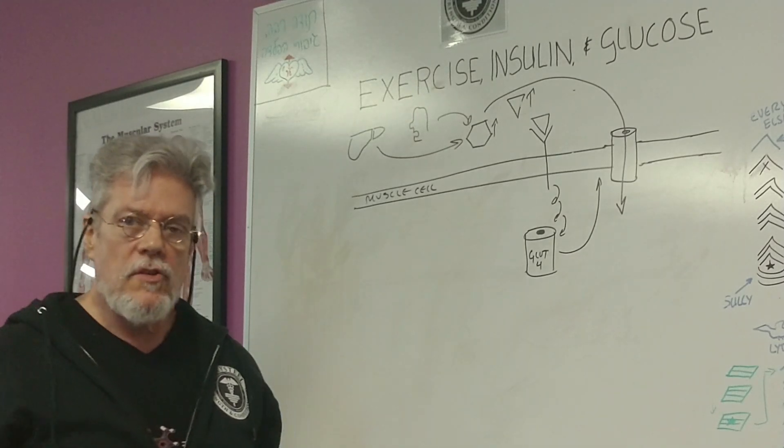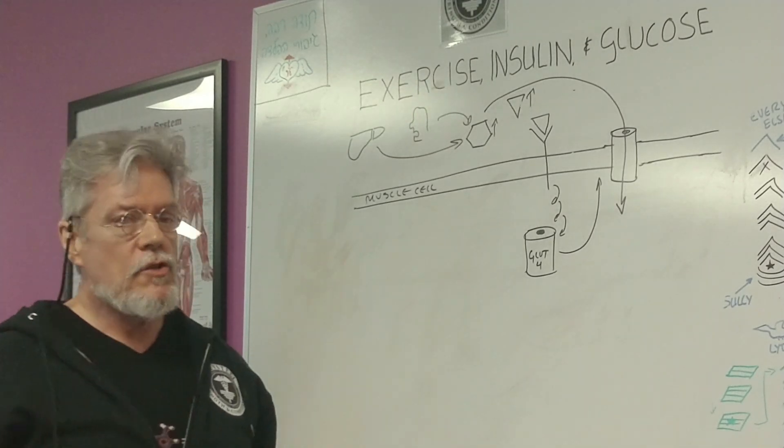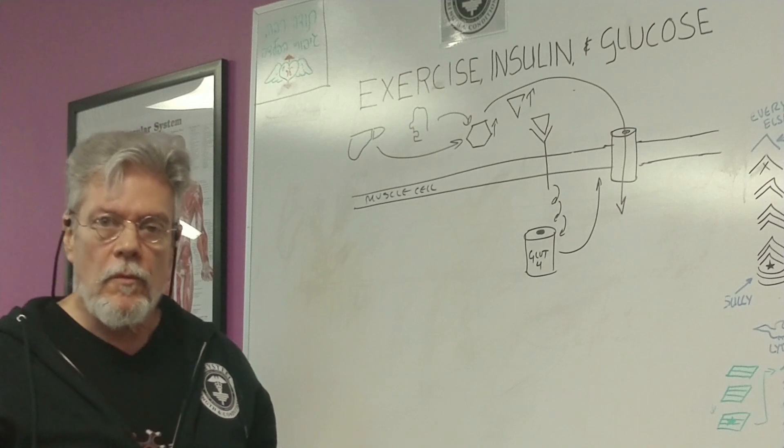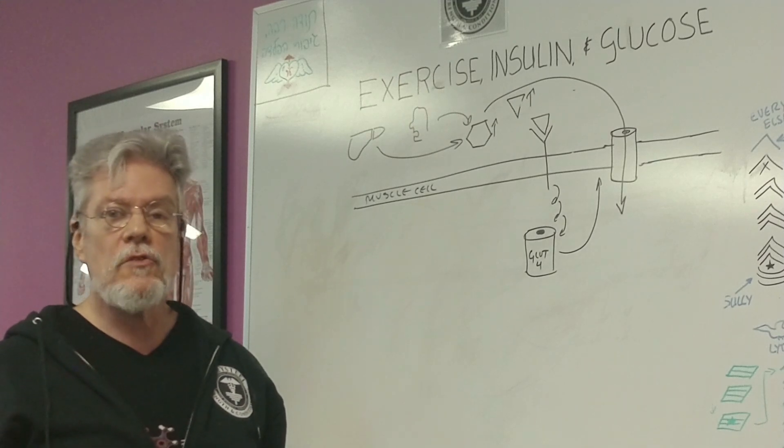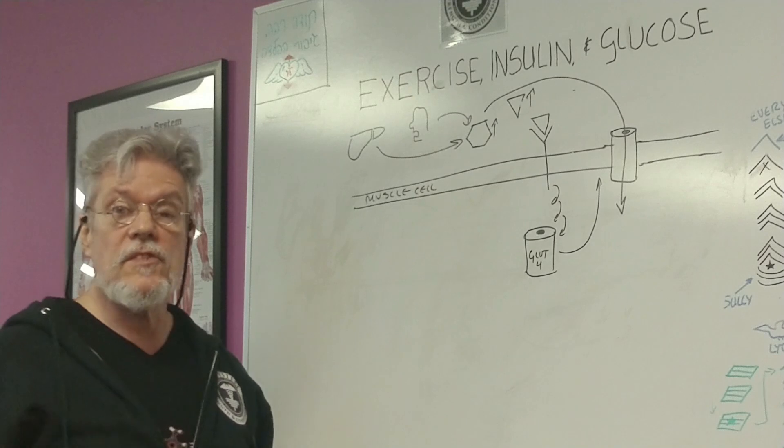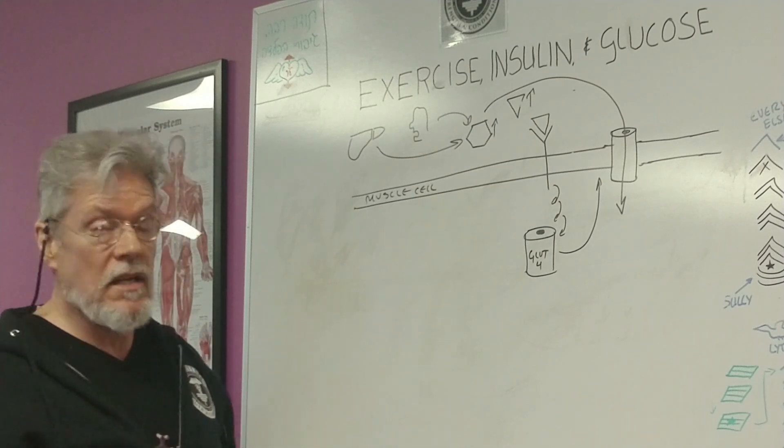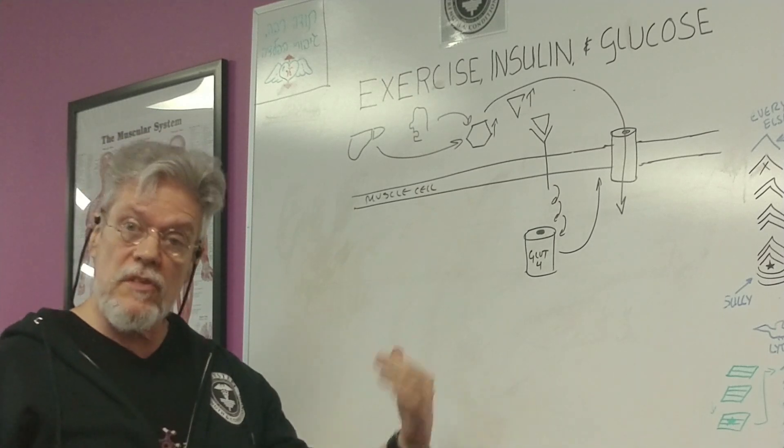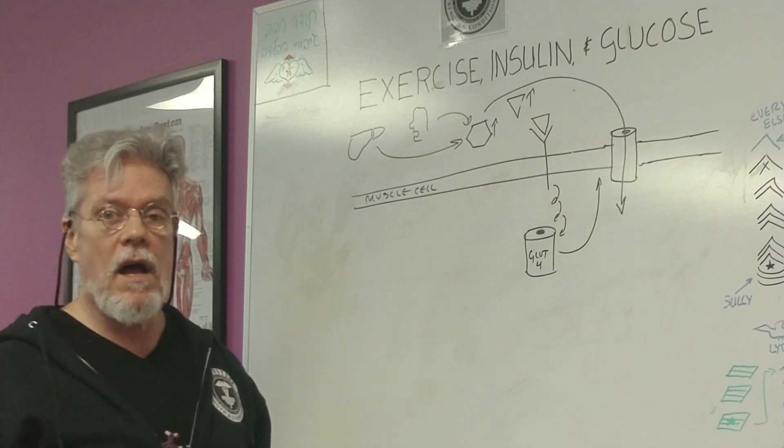But what about exercise? During exercise, you don't want your blood sugar to drop, right? So exercise actually decreases insulin production. And this decrease in insulin production means a decrease in insulin signaling. But you still have to get glucose into the cell.